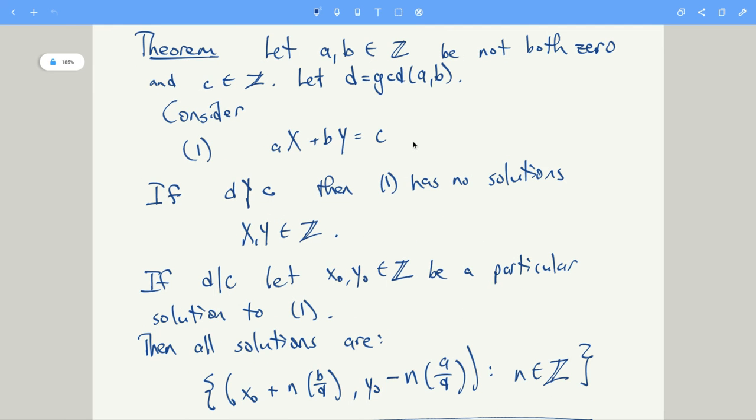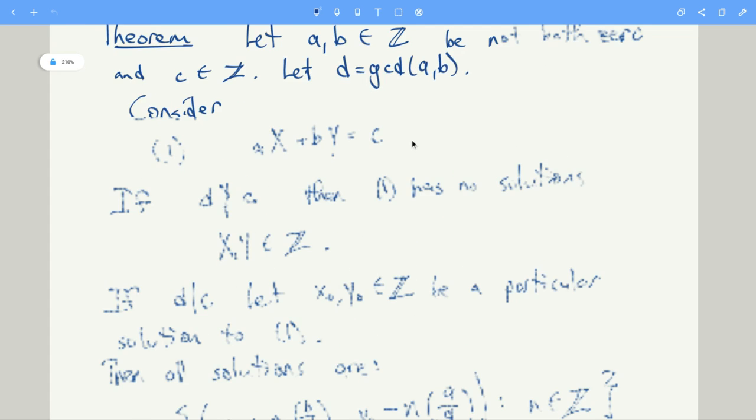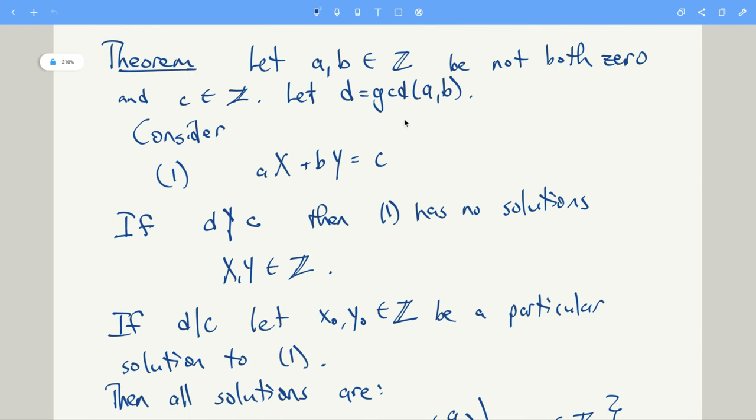And we have this theorem. It says that if a and b are integers, not both 0—if they're both 0, the equation ax plus by is just like 0 equals c, that's not interesting—and c is an integer, and we know we can compute the GCD of a and b, let's call that d. Let's consider our Diophantine equation. First thing,